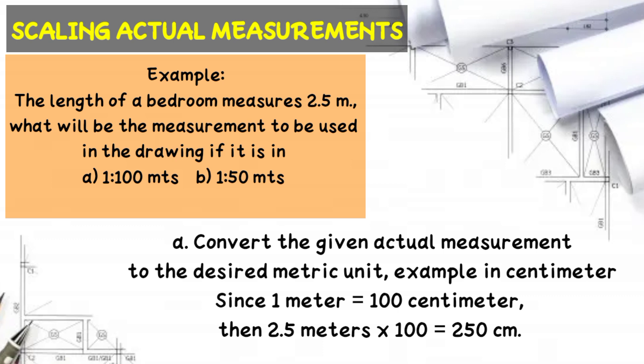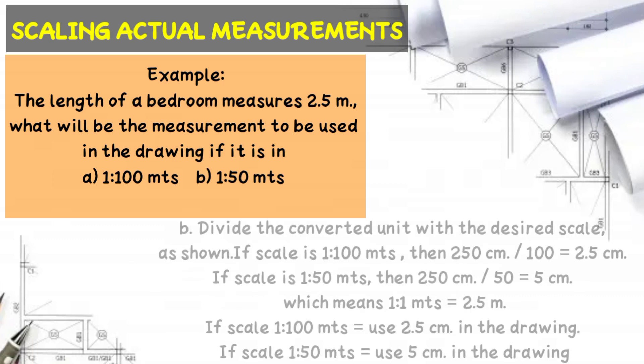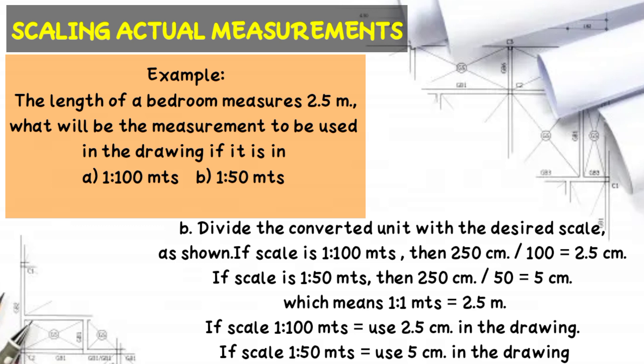Next, divide the converted unit by the desired scale. If the scale is 1 to 100, then 250 cm divided by 100 equals 2.5 cm. If the scale is 1 to 50, then 250 cm divided by 50 equals 5 cm.